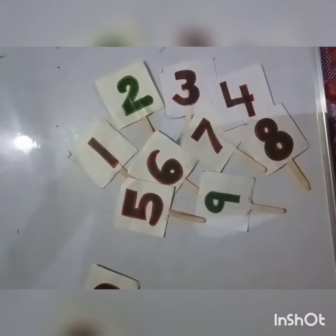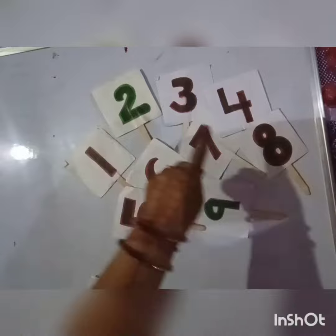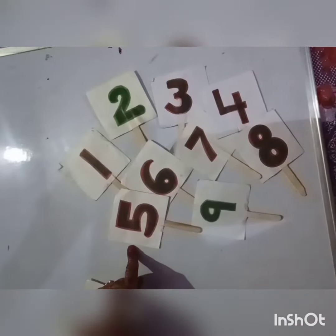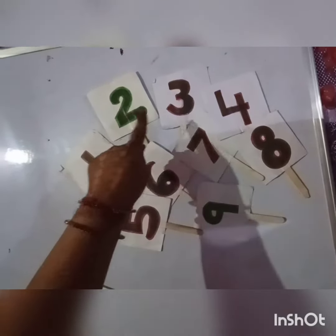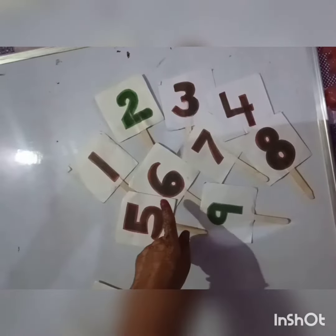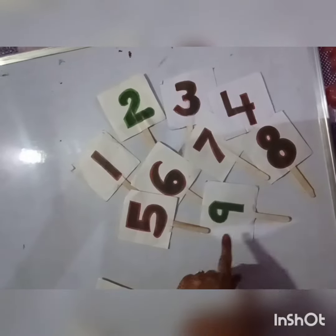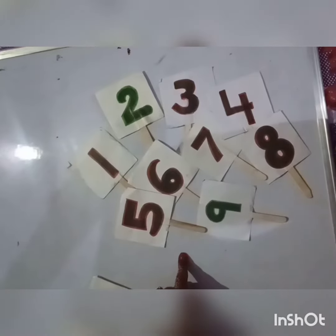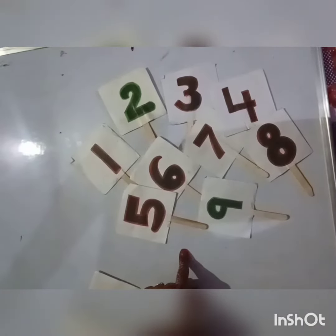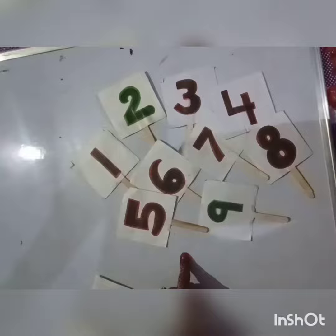Let's start the story. Once upon a time, all the numbers were playing together — number 1, 2, 3, 4, 5, 6, 7, 8, 9. They were playing together and they were very happy.